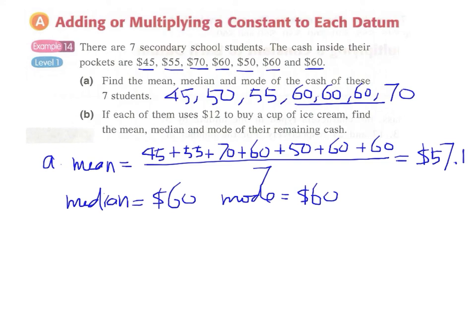And for part B, if each of them use $12 to buy a cup of ice cream, that is each student, the amount of cash of each student will be decreased by $12. So 45 becomes 34, 38, 43, 48, 48, 48 and then 58.